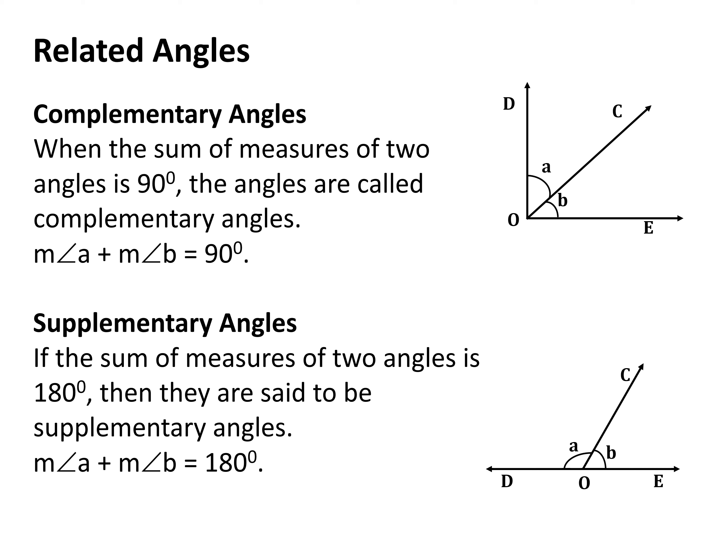Students, come on, tell me, what is the sum of measures of two complementary angles? Anybody? Yes, I know, everybody knows this answer. It is 90 degrees. Correct. So, when the sum of measures of two angles is 90 degrees, the angles are called complementary angles. Here in the figure, you can see measure angle A plus measure angle B is equal to 90 degrees.